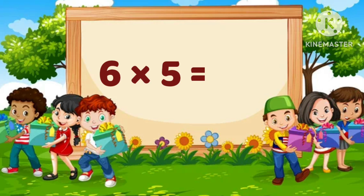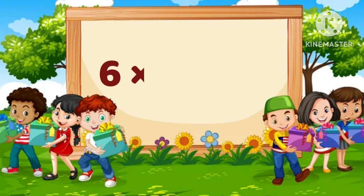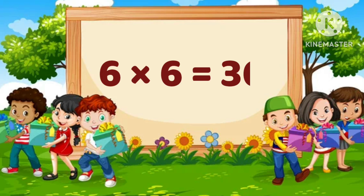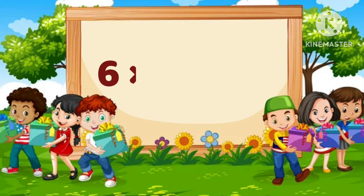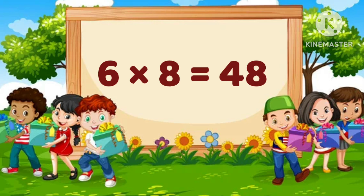6 times 5 is equal to 30. 6 times 6 is equal to 36. 6 times 7 is equal to 42. 6 times 8 is equal to 48.